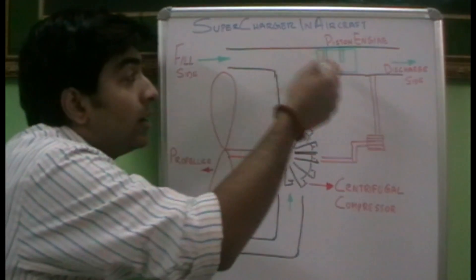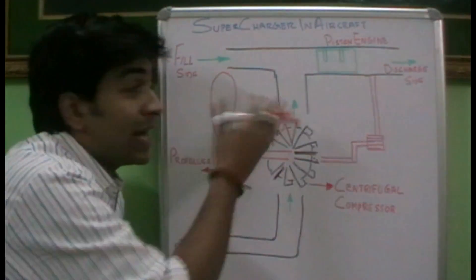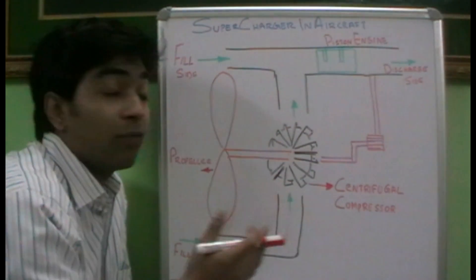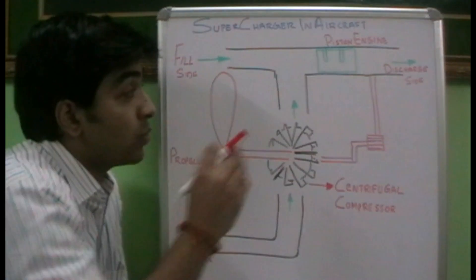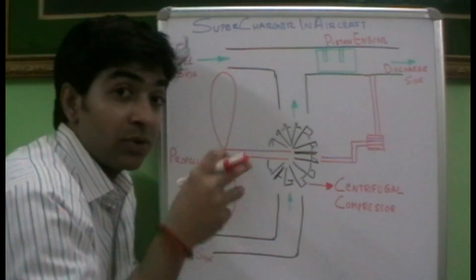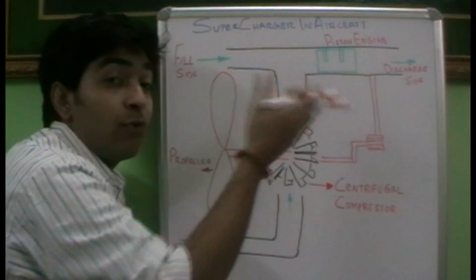More fuel can be injected into the inlet manifold for combustion because more air is being supplied. For 14 amount of fuel, one amount of air is required - that is the ratio of 14 is to 1. As we are supplying more compressed air at high pressure to the inlet manifold, more fuel will be used for combustion, resulting in the production of more power and more torque for the aircraft engine.